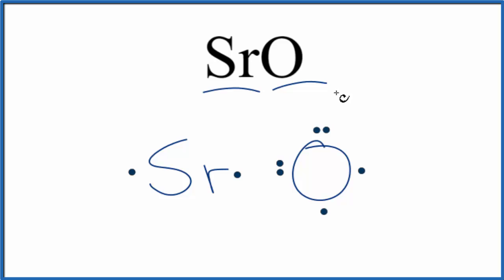So strontium, that's a metal. Oxygen is a nonmetal. And because of that, the metal transfers the electrons to the nonmetal, because this is an ionic bond. So the strontium is going to transfer both electrons here to the nonmetal. We'll move one over here, and then we'll put the other one here.